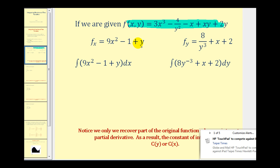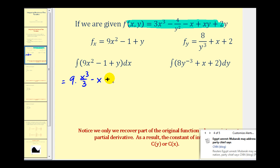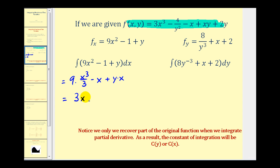Now let's see if we recover the function if we integrate this partial derivative with respect to x. We'd have 9 times x to the third over 3 minus x plus, treating y as a constant, y times x. Simplifying, we get 3x squared minus x plus xy. Comparing this anti-derivative with the original function, notice we don't recover the entire function — we're missing some terms. So instead of just writing plus c, we write plus c of y to recognize that we may not have recovered the entire function in terms of y.